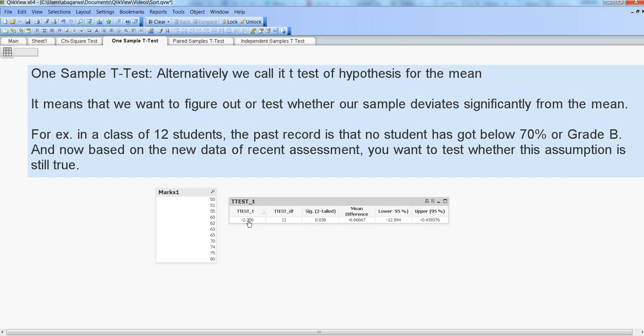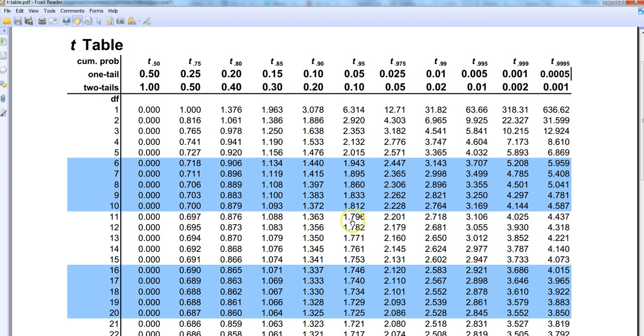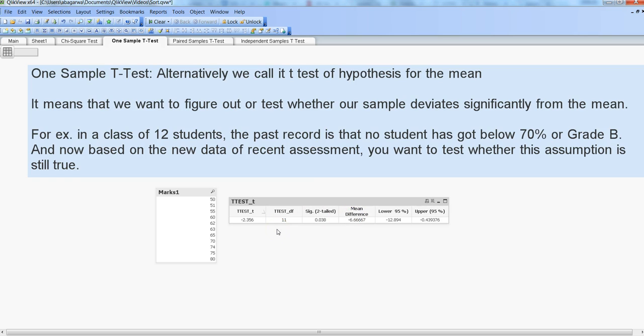In that case, we're going to reject the null hypothesis and conclude that our credibility of Class 12 students - the number of marks they used to get - has gone down significantly below 70%. With this help of test value and degree of freedom, you figure out the t-score and then draw the conclusion.